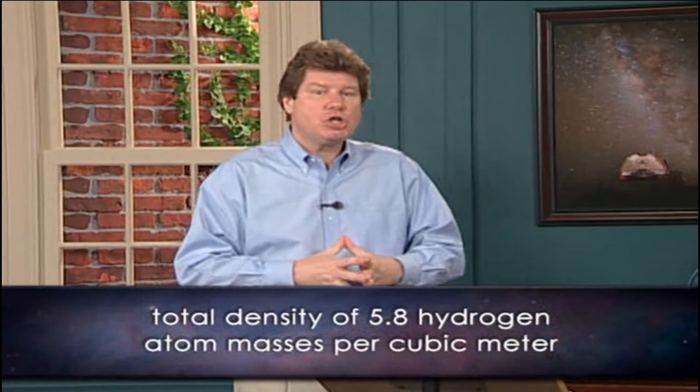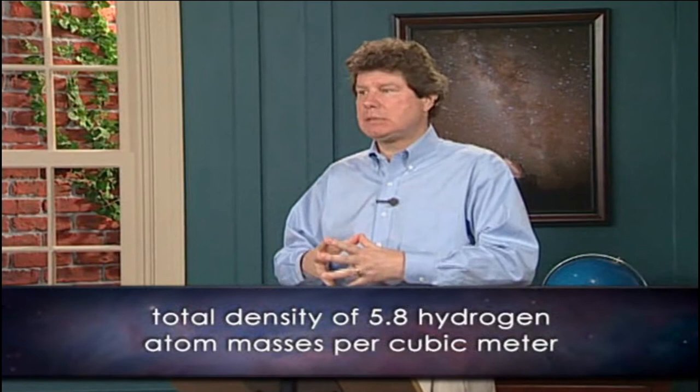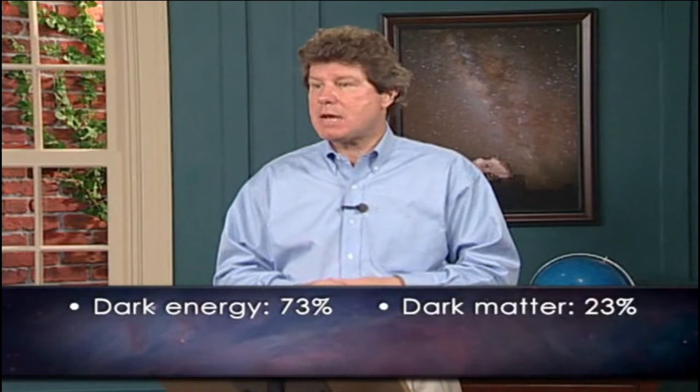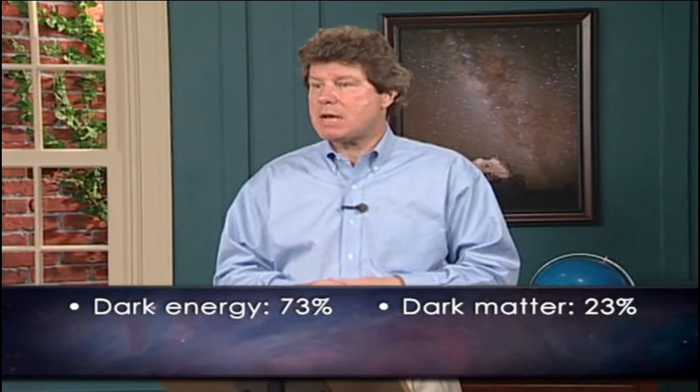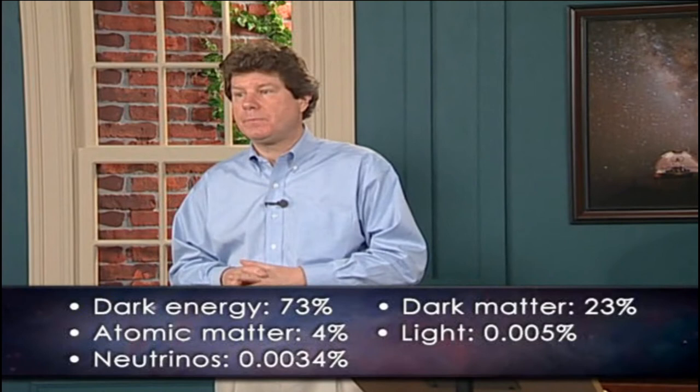Now you know the five cosmic components — let me review their relative amounts. When averaged over the whole universe, you find a total density of about 5.8 hydrogen atom masses per cubic meter, roughly a grain of sand within the Earth's volume. The universe is, on average, extremely empty. Of this density, dark energy makes up 73%, dark matter 23%, atomic matter 4%, and light and neutrinos are tiny at 0.005% and 0.0034%. How these numbers are measured is quite a story — I'll come back to them in lecture 26.